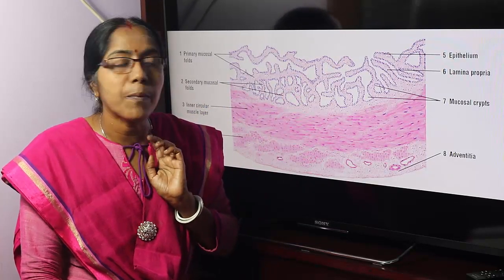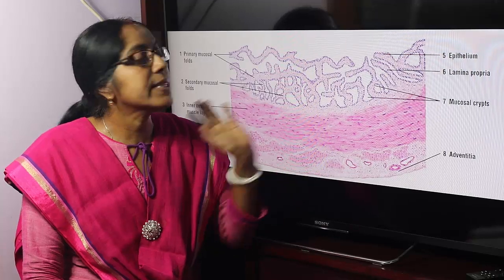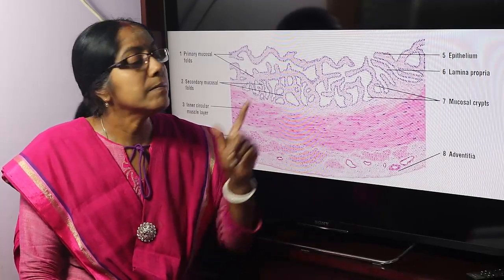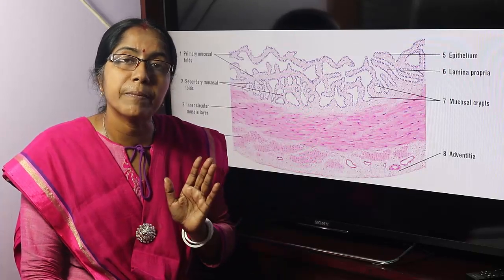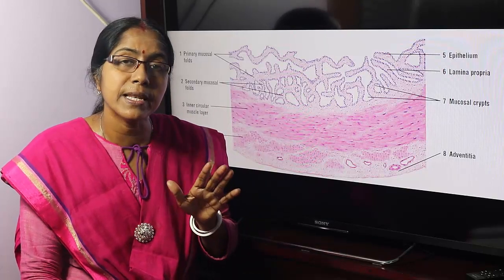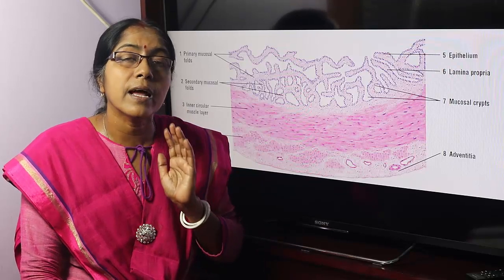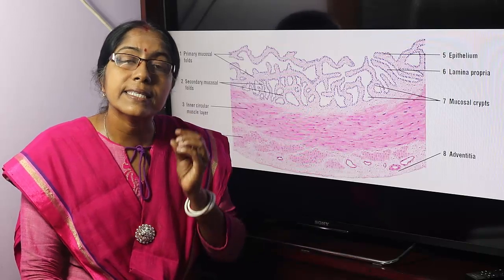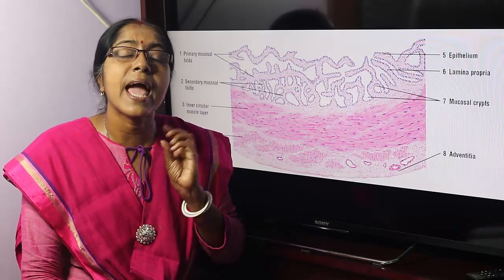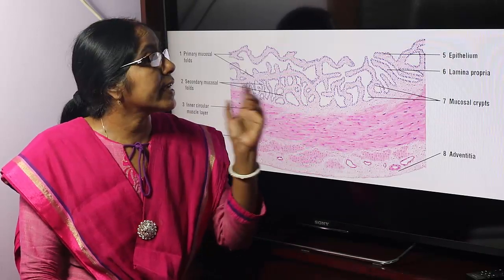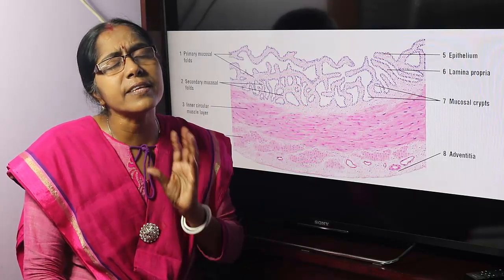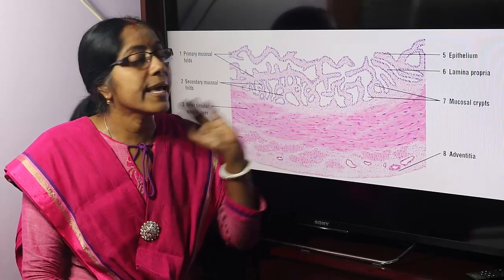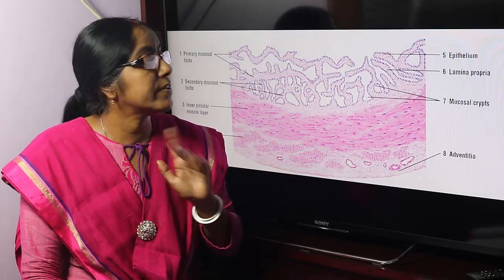The lining epithelium of the seminal vesicle is pseudostratified columnar epithelium — a secretory epithelium. The secretion includes fructose, which provides nutrition to spermatozoa, choline, prostaglandin, and vesiculase. The secretion by the seminal vesicle contributes 60% to the total seminal fluid.